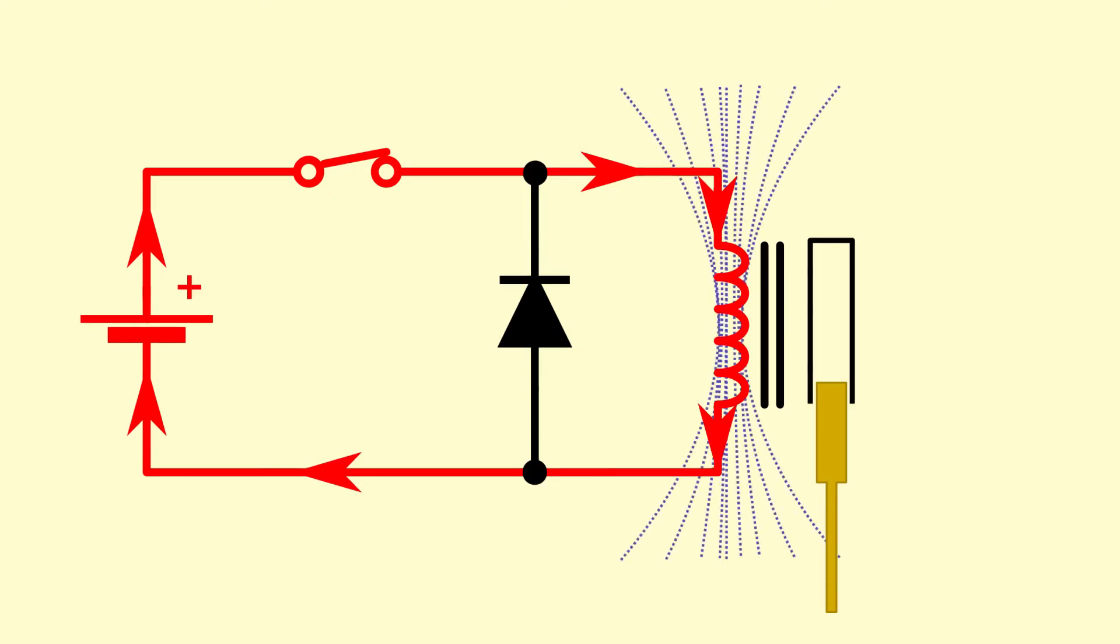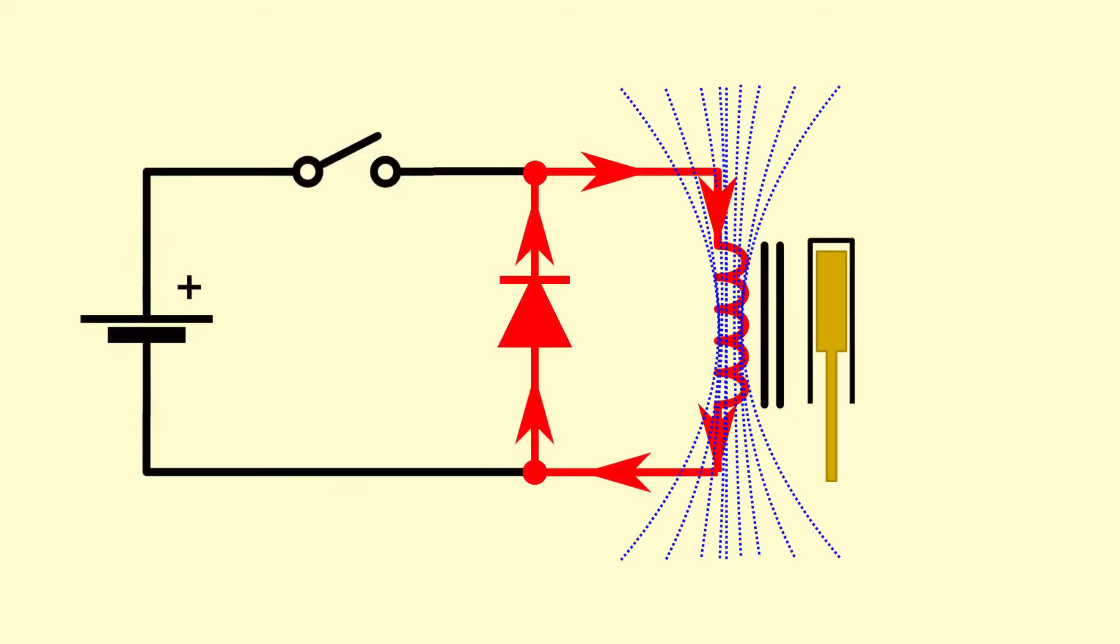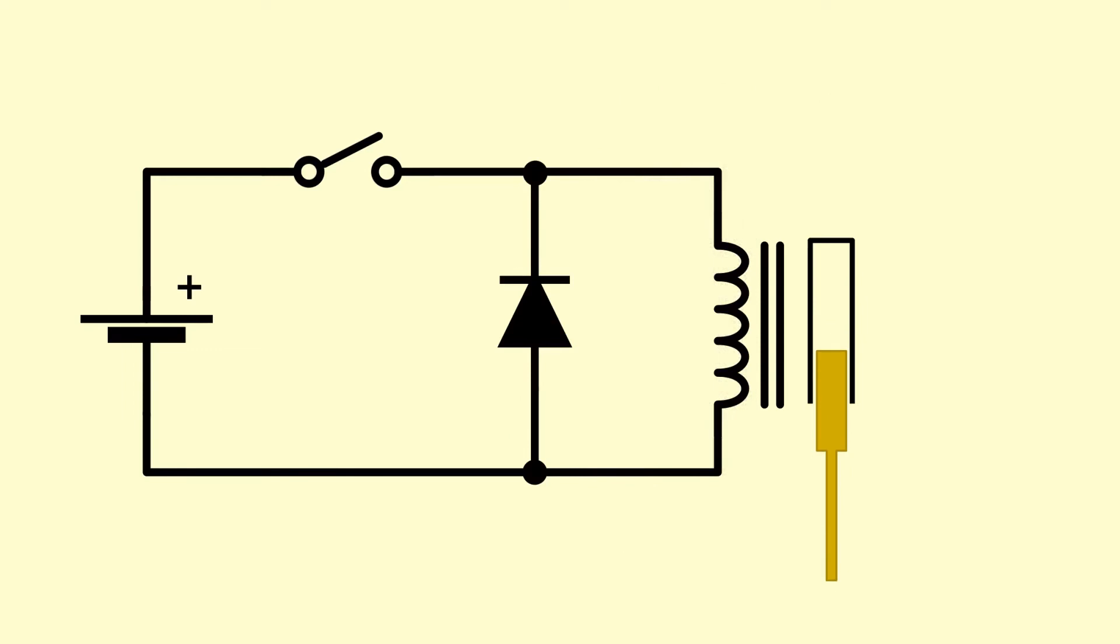The magnetic field builds up in the coil, moving the plunger, opening the valve, exactly as before. So what happens now when you open the switch and cut off the current? Now the diode is forward biased and the current can circulate harmlessly as shown until all the energy stored in the magnetic field has dissipated.